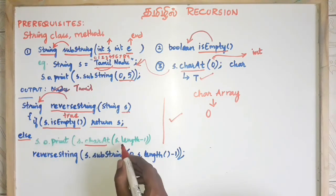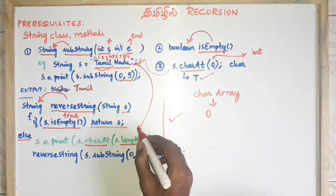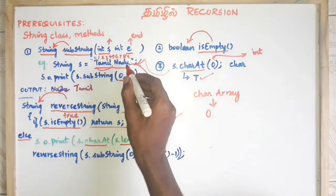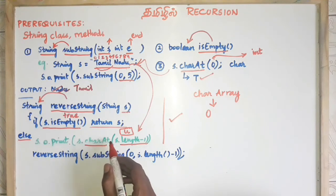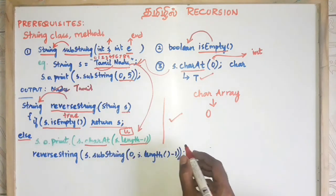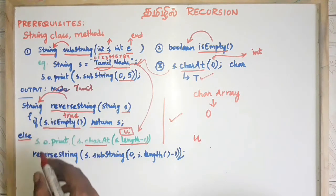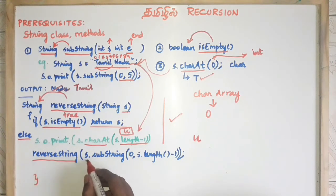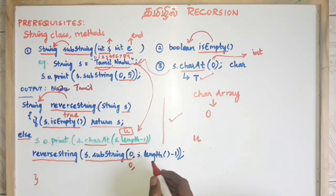In the else part, we use charAt. We use s.charAt(s.length - 1) to get the last character and print it using System.out.print. Then we make a recursive call to reverse the string using s.substring(0, s.length - 1).